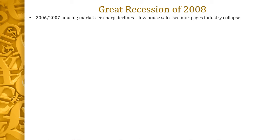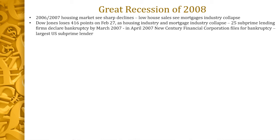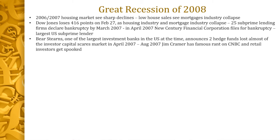The Dow Jones dropped 416 points on February 27, 2007. Subprime mortgage lenders started declaring bankruptcy — 25 of them by 2007. In April 2007, New Century Financial Corp, one of the largest subprime lenders in the United States, filed for bankruptcy. What really spooked people was Bear Stearns coming out that same month saying two of their large hedge funds had lost most of their investors' capital — because they had bought a lot of these securities that lost value as people defaulted on their mortgages.